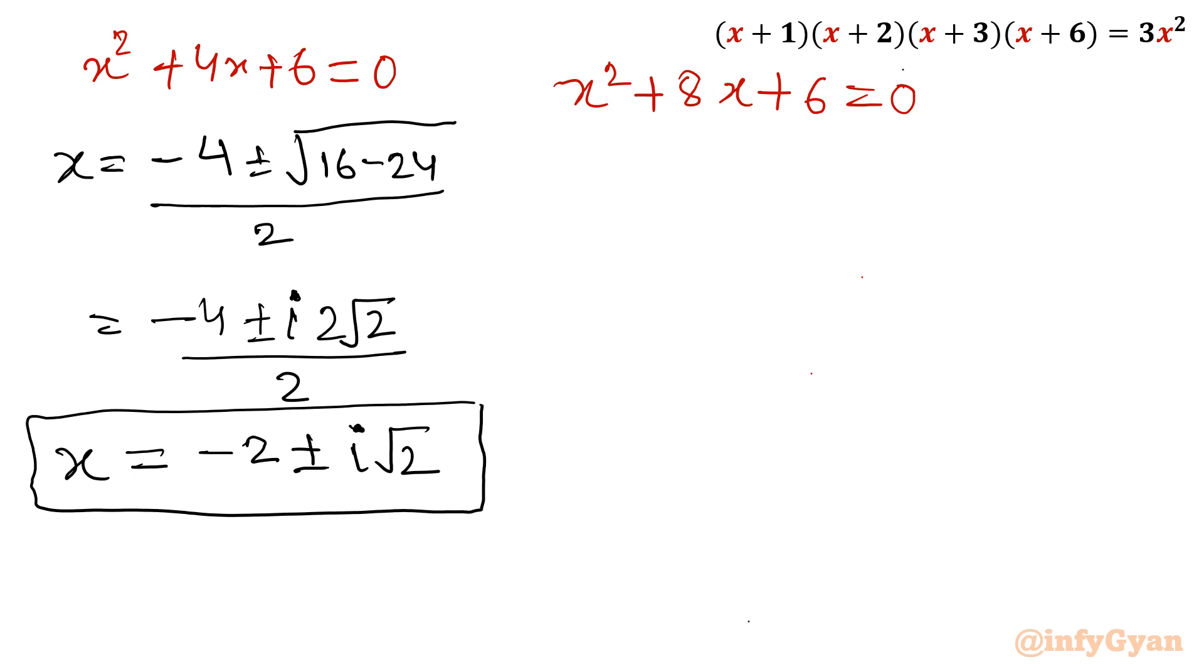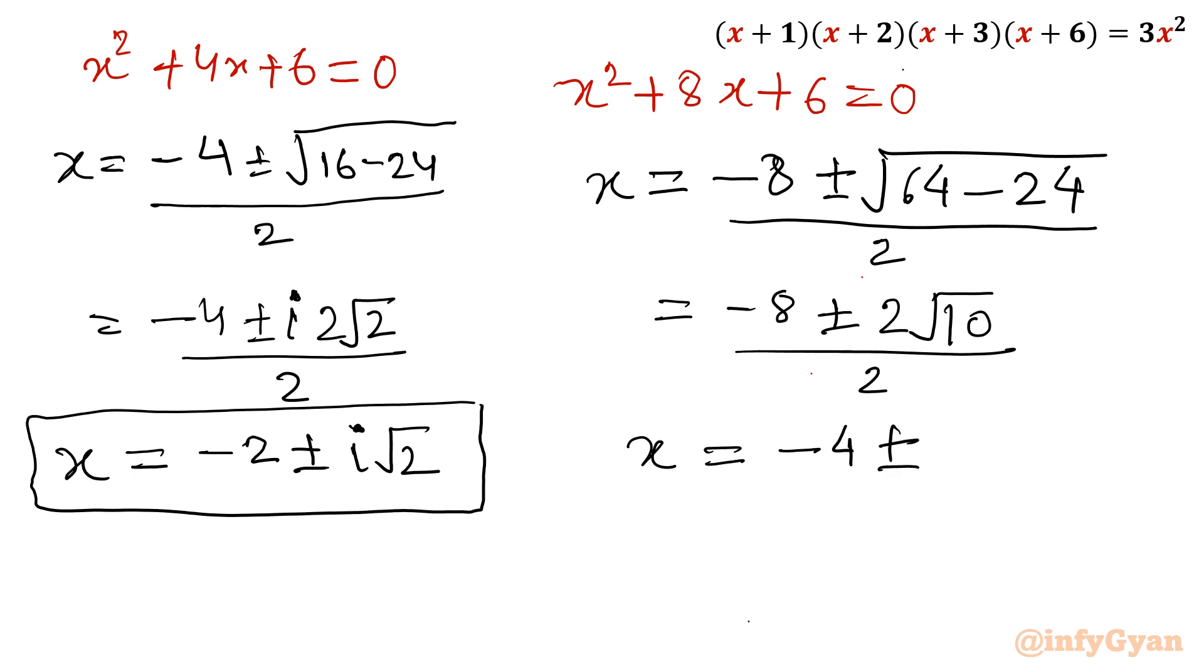Now come to this second quadratic equation. I will find out using quadratic formula. Minus 8 plus minus under the root b² so 64 minus 24, forty. So can write 4 times 10 over 2. So x will be equal to minus 4 plus minus root 10.